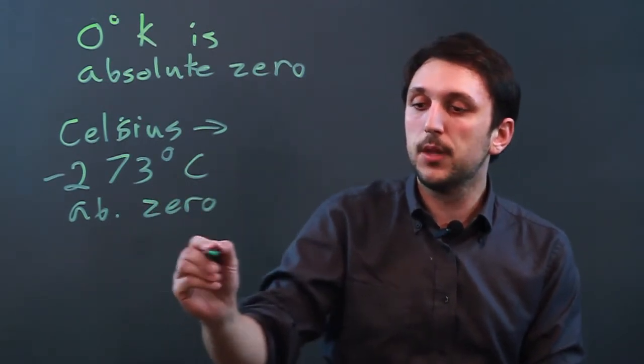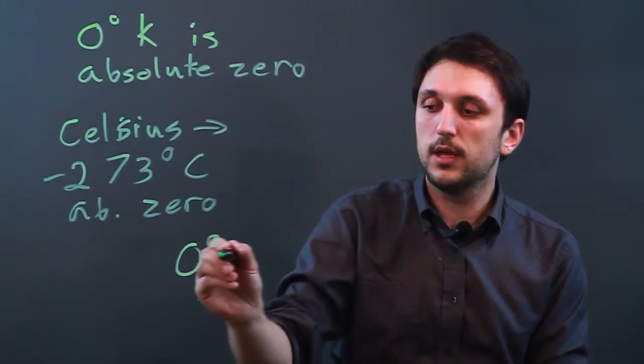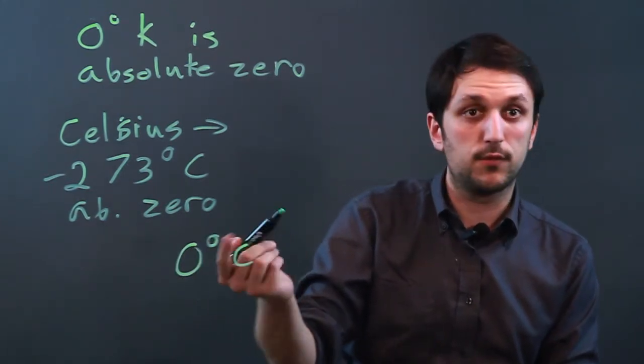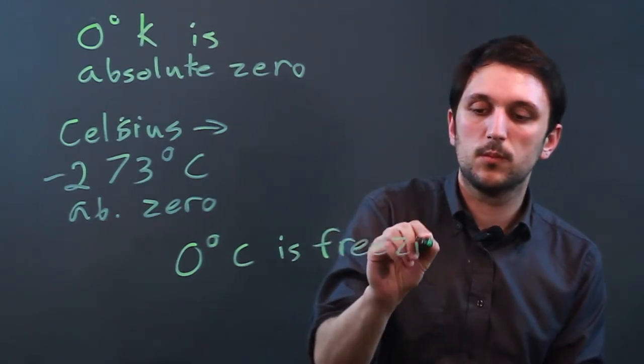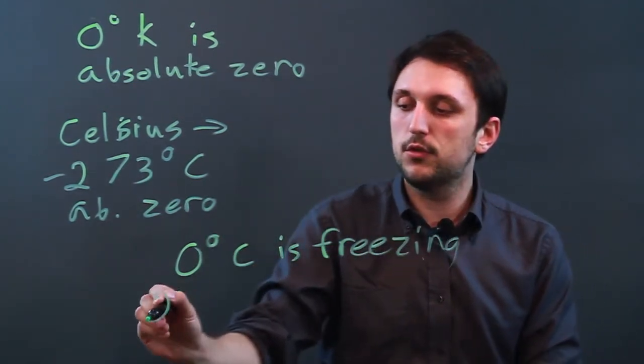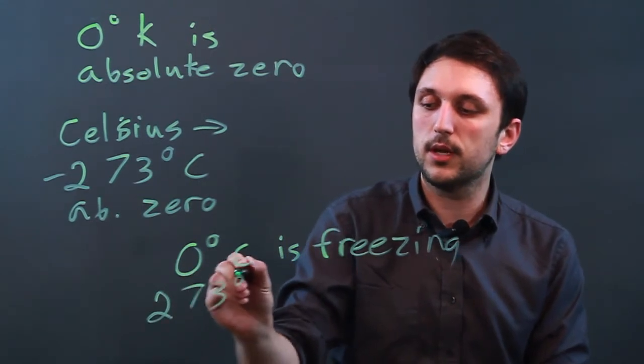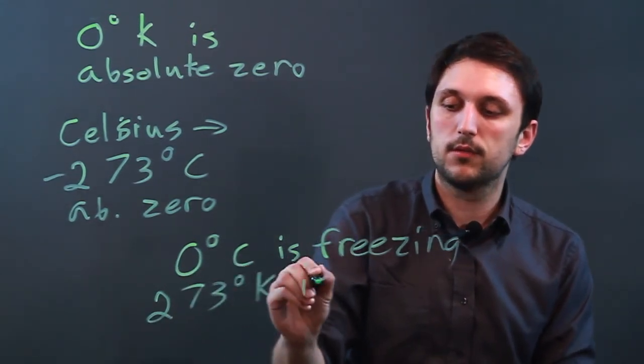So for example, zero degrees Celsius is freezing, and that means 273 degrees Kelvin is freezing.